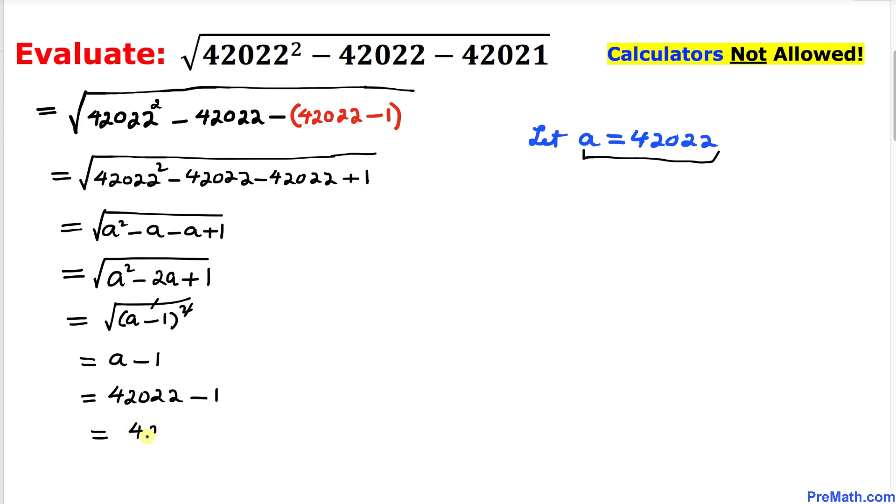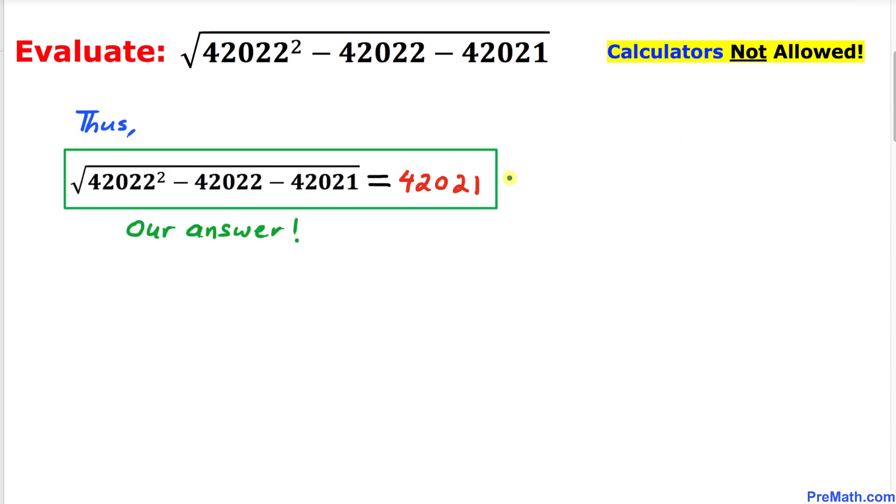So that means this simplified answer is going to be 42021. Thus, our simplified answer turns out to be 42021.